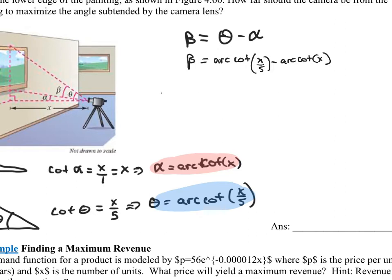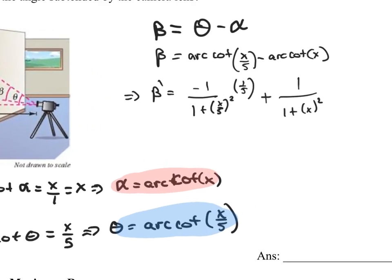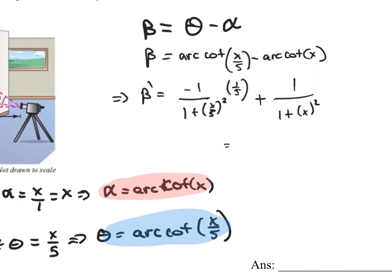Again, I want to maximize this, so I'm going to find the derivative with respect to X. The derivative of arc cotangent is negative 1 over 1 plus the argument squared, times the chain rule. So beta prime equals negative 1 fifth all over 1 plus X squared over 25, plus 1 over 1 plus X squared.